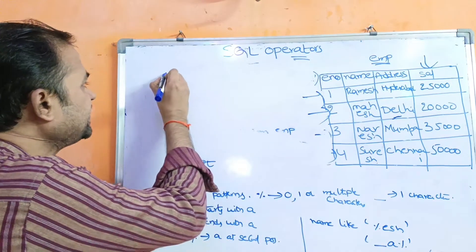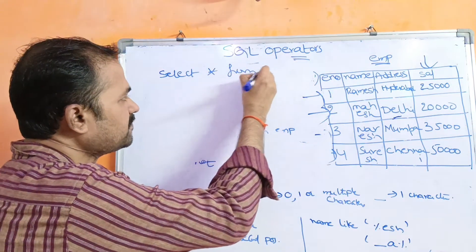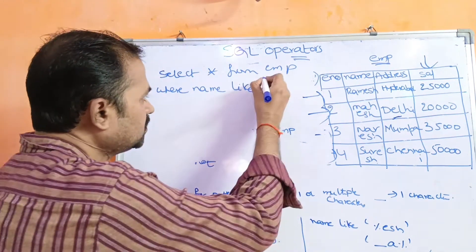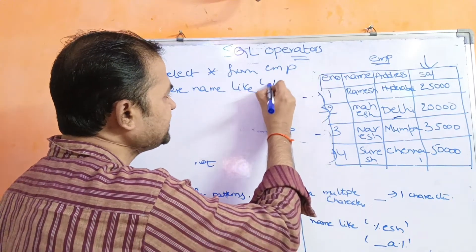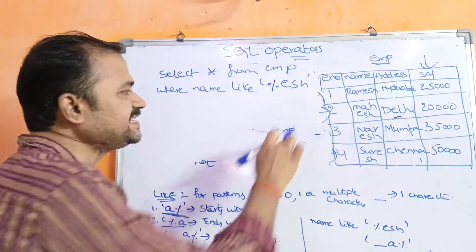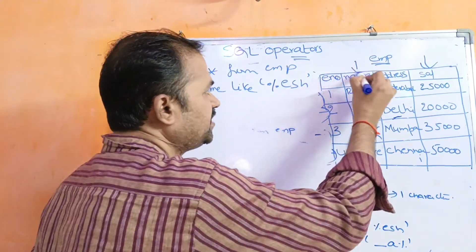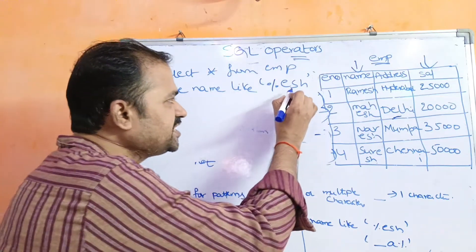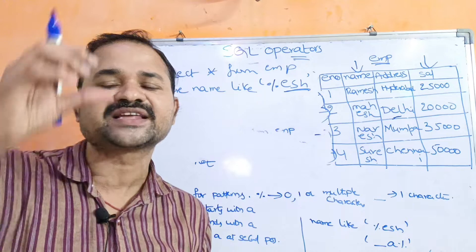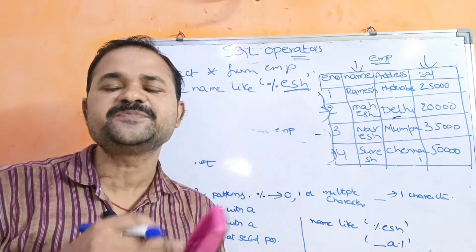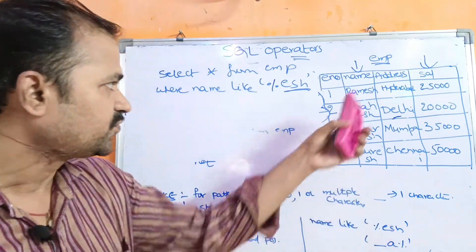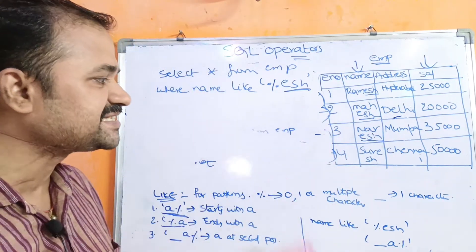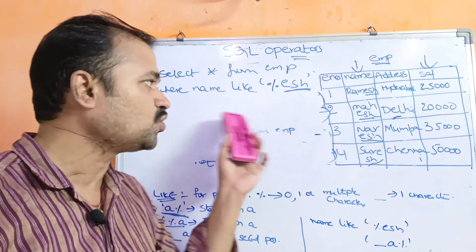Let us see some examples. SELECT * FROM EMP WHERE name LIKE '%ESH'. The condition is that the name ends with ESH. If you take Ramesh — it ends with ESH. Mahesh — ends with ESH. Naresh — ends with ESH. Suresh — also ends with ESH. So all four records will be displayed; the entire table will be displayed.